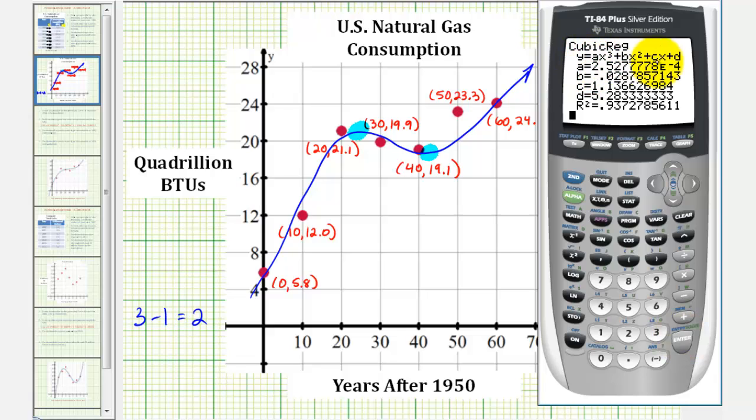Notice how we have the regression equation where we're given A, B, C, and D from this form of the cubic equation. Notice that R squared, our coefficient of determination, is also given because we selected diagnostic on. The closer R squared is to 1, the better the model. So with an R squared value of approximately 0.937, this is a pretty good model.